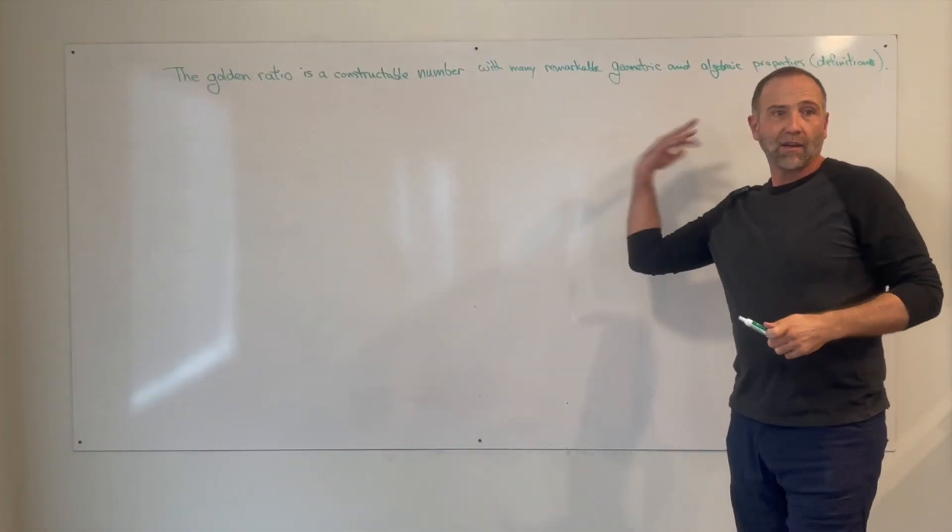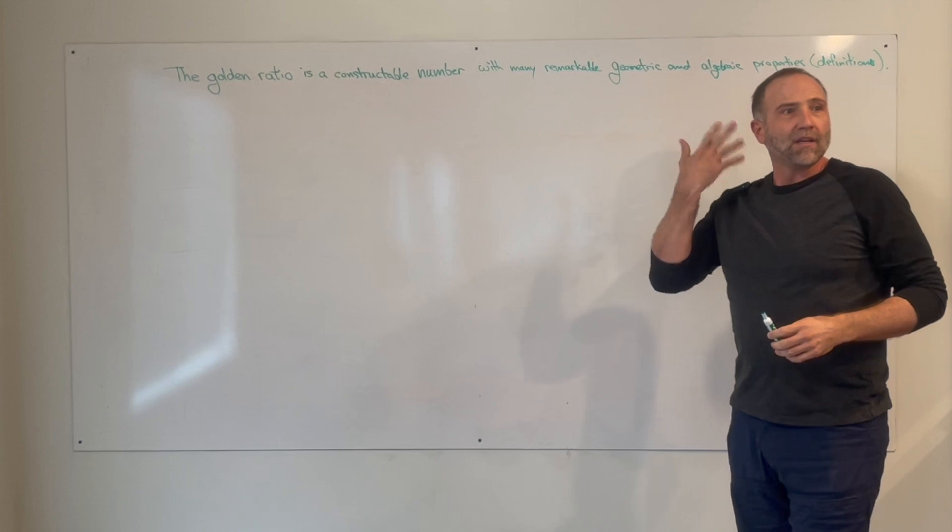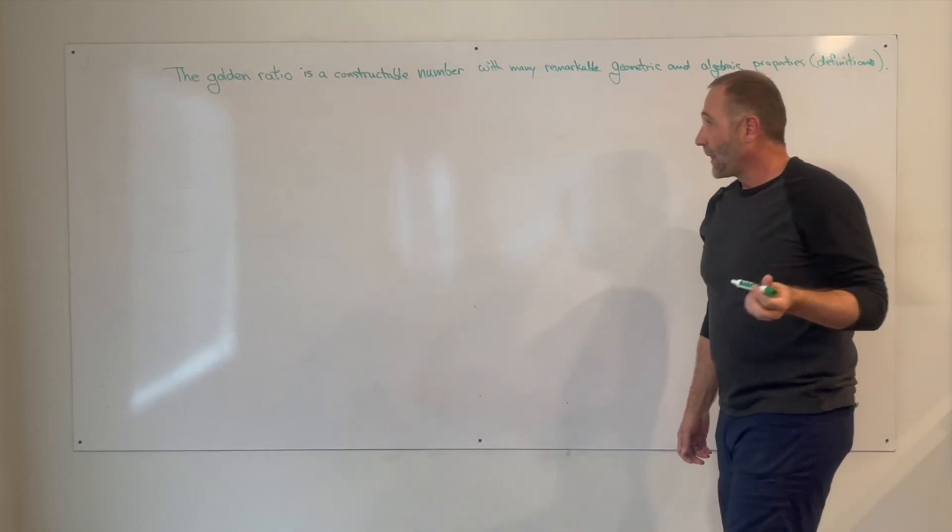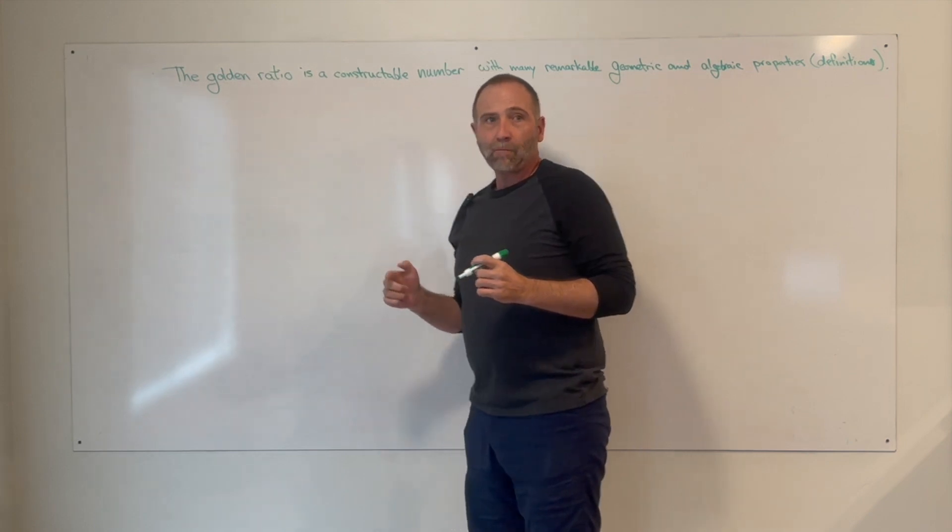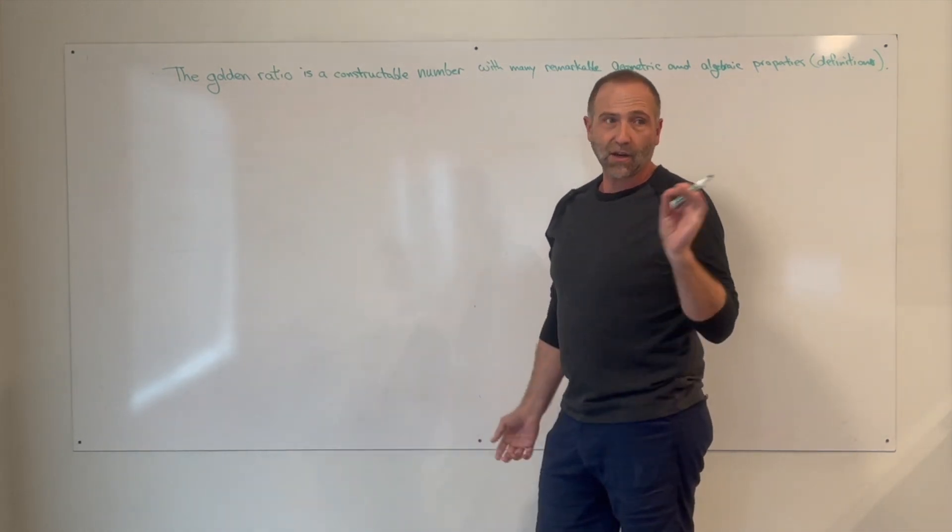Our objective is to understand what those properties really mean in a geometric way, in a picture you have in your head. So the first thing is there's many ways to get to the golden ratio algebraically or geometrically. Let's start with geometrically.